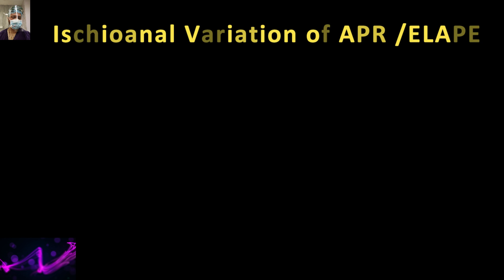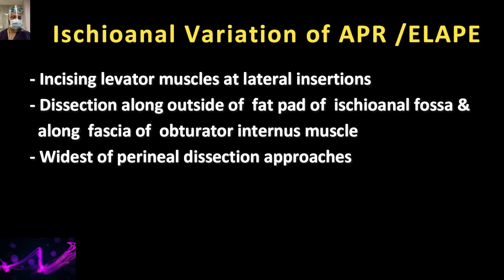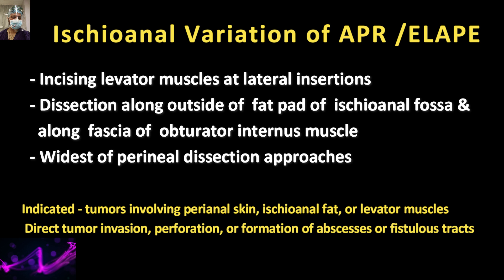There is one variation of ELAPE — ischioanal resection. In this, the levator muscle is incised at its lateral insertion, and the entire pad of fat of the ischioanal fossa is removed alongside the fascia of the obturator internus muscle. This is worth remembering as it can be the subject of many exam questions. It results in the widest defect, requiring mesh or some form of complex closure, which will be discussed in later parts of this series.